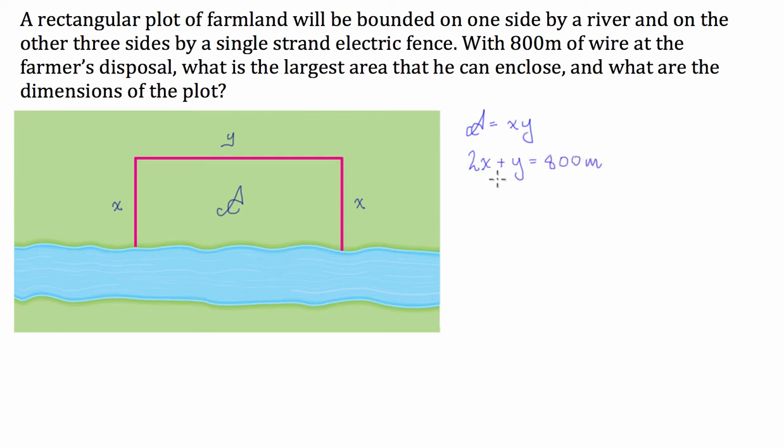Now, it could be 2x plus y could be less than 800. He could have fence left over after he's built this enclosure. However, if he has fence left over, he's not going to be able to make the maximum area. The maximum area is only going to be able to be achieved if he uses up all of the fence.